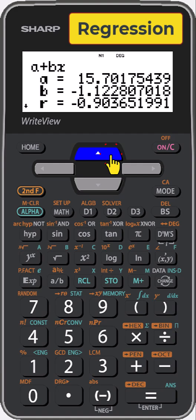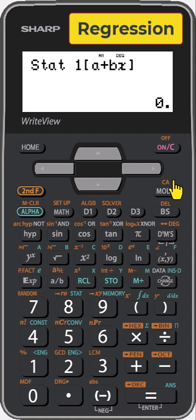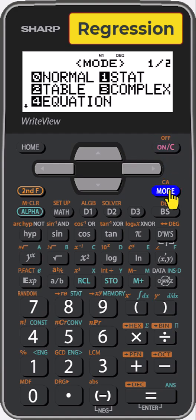To return to normal mode, press ONC to clear. Press MODE, and select 0 for normal mode.